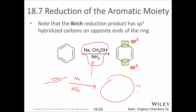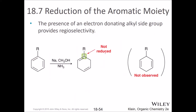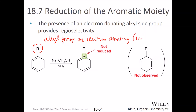Now let's talk about regioselectivity. If we have an electron-donating group — alkyl groups are electron-donating by induction — it turns out that the carbon bearing that group is not going to be reduced. That carbon's not going to be reduced, and so we end up with double bonds there. You will not get those double bonds reduced if you have an electron-donating group.